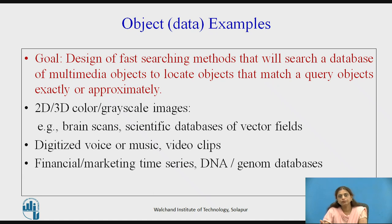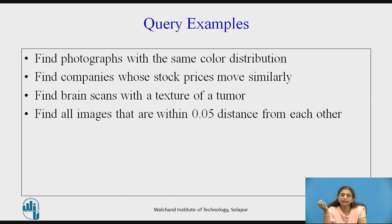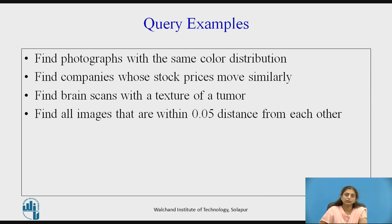All these patterns that we are finding will be used for prediction and other purposes. Query examples include: find photographs with the same color distribution, find companies having similar stock trends, find brain scans with a tumor, or find images within a specified distance from each other.